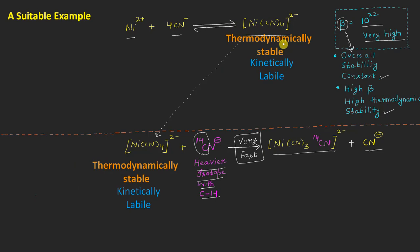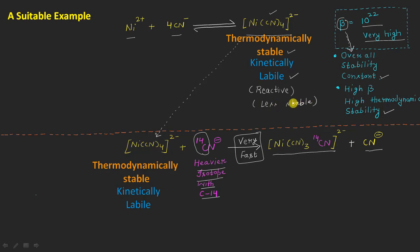We have this complex molecule which is thermodynamically stable, but kinetically it is labile — kinetically reactive or kinetically less stable. This is what is meant by kinetic versus thermodynamic stability. Hope you have enjoyed this lecture. Thank you so much.